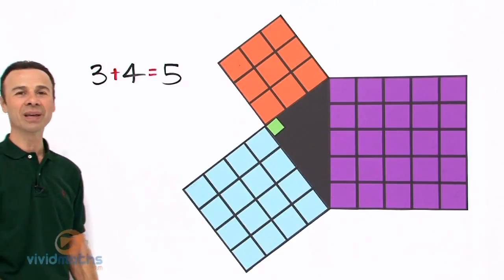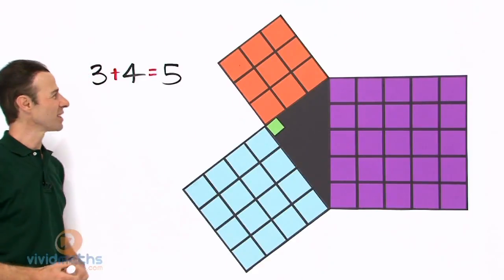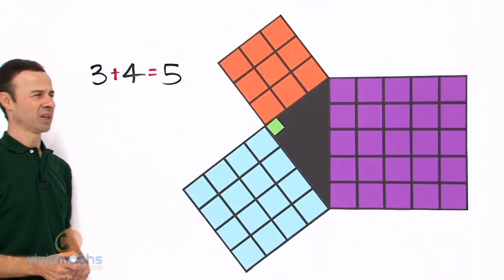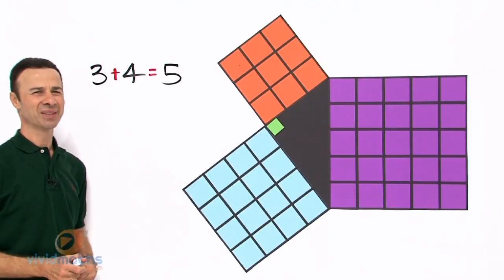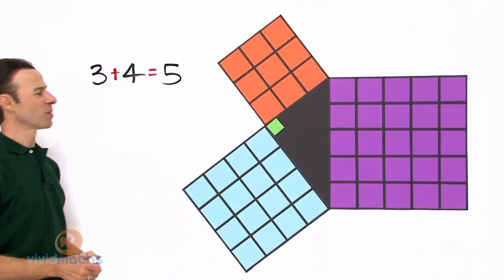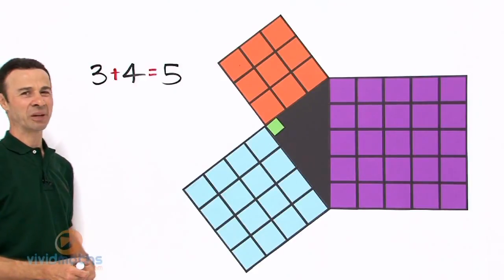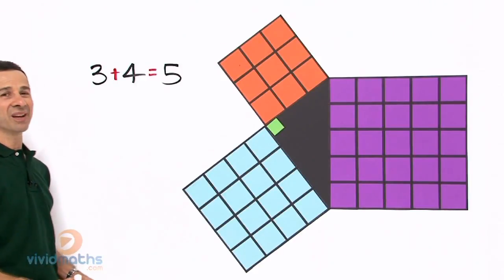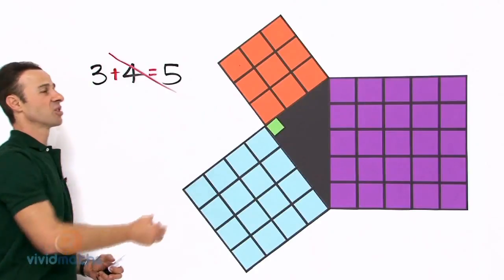Okay, we have 3 plus 4 equals 5. Now does 3 plus 4 equal 5? No it doesn't, does it? 3 plus 4 is 7. 7 doesn't equal 5. Well there goes that theory, that's not going to work too good.